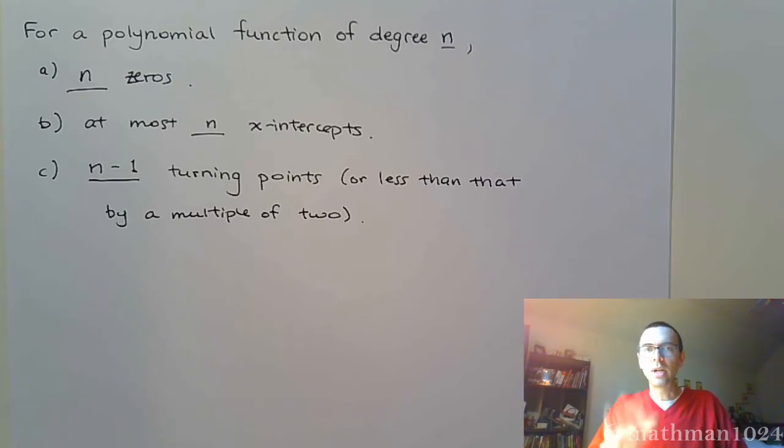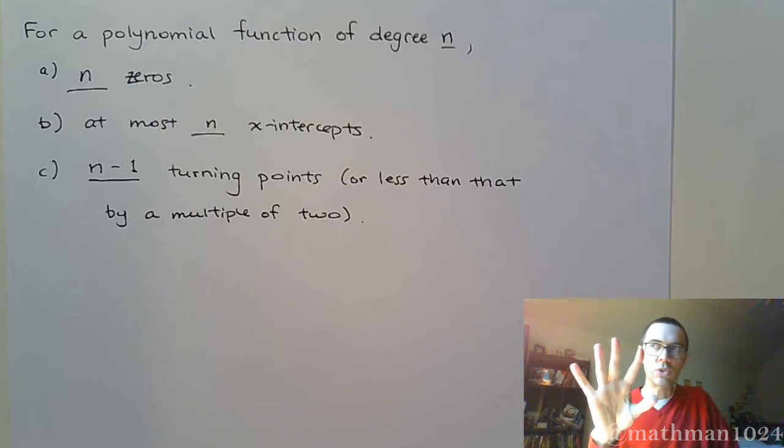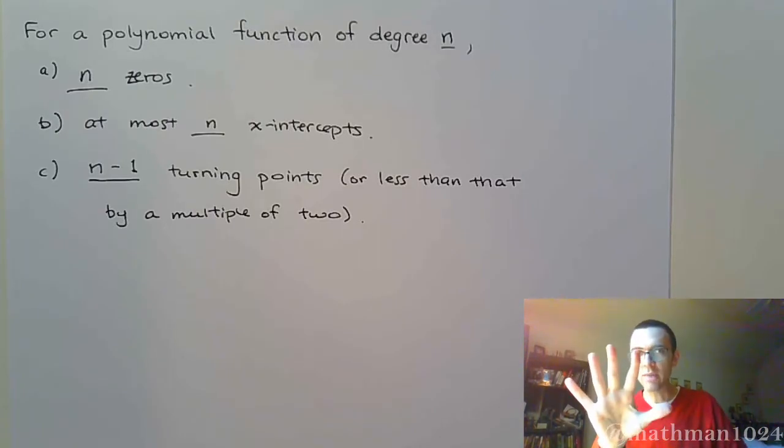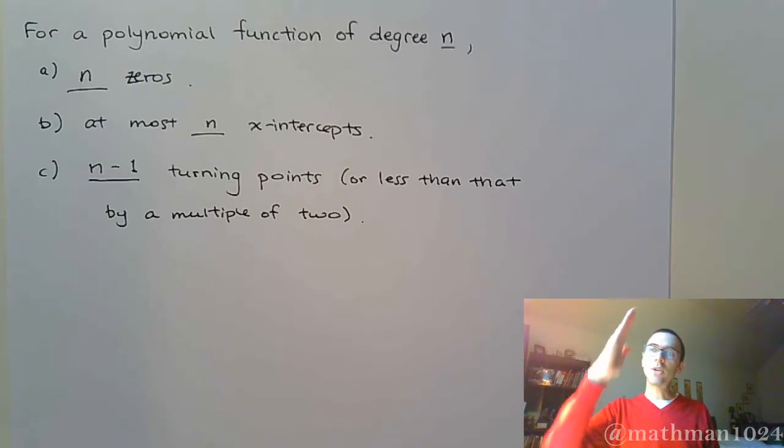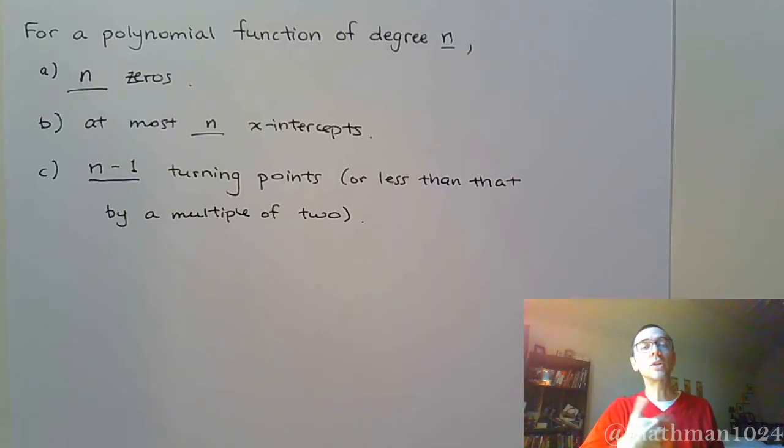That means that if you have a polynomial of degree 5, you are going to have five zeros, some of which may be repeated, but you're going to have five zeros. You're going to have, at most, five x-intercepts with the number of turning points. And a turning point is where you go from increasing to decreasing, where you turn that way, where you go from decreasing to increasing. And again, you're turning to go the other direction.